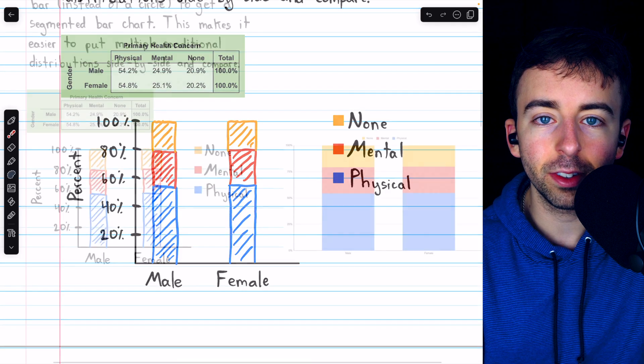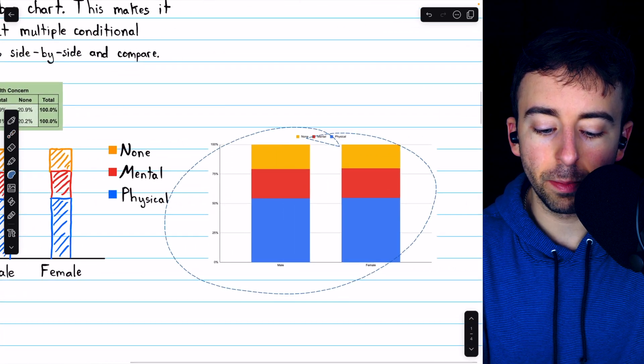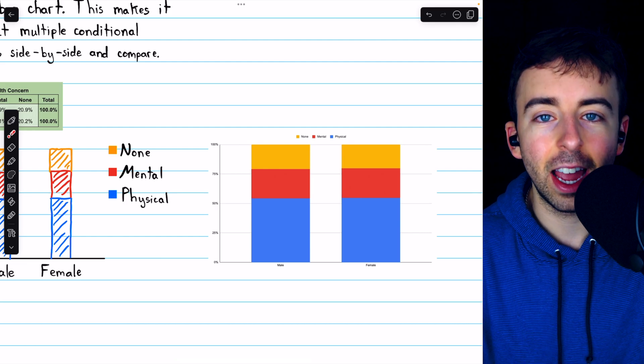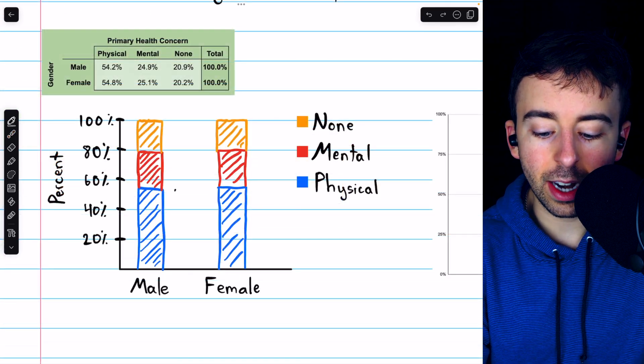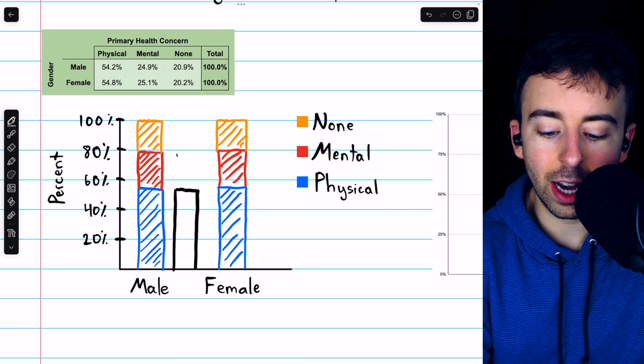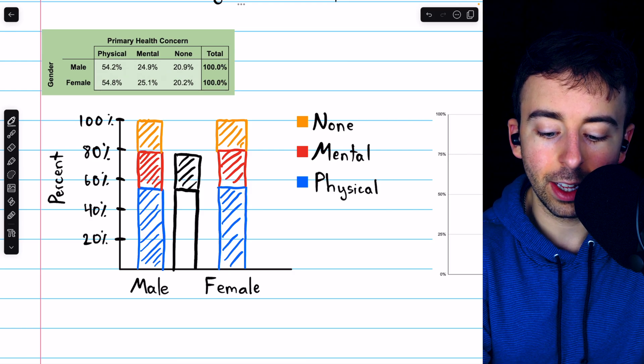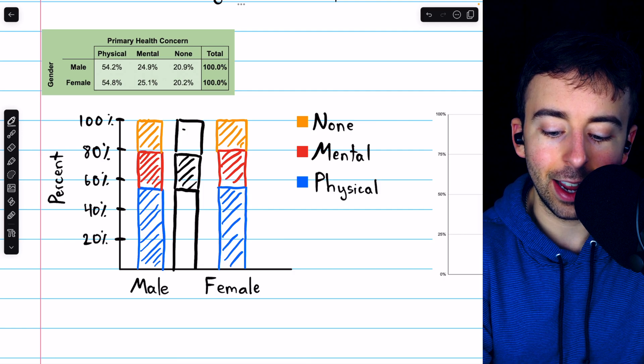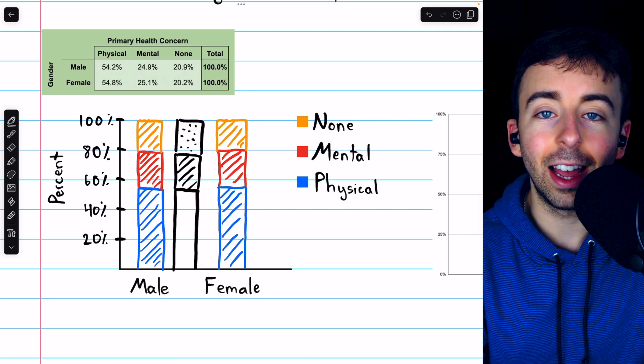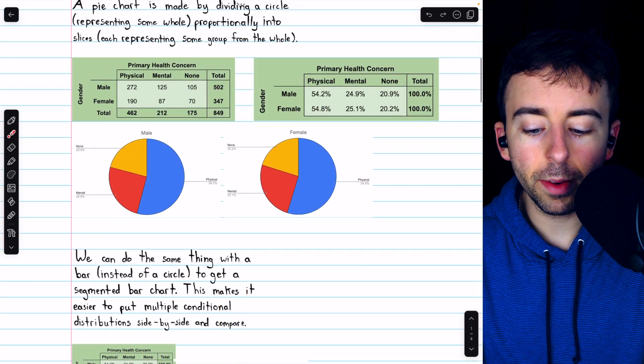And for comparison, here is a computer-generated segmented bar chart, which comes from the same data. And once again, if you didn't have colors and you were only using a single pencil, you could use shading patterns to distinguish between the segments. You could have no shading, diagonal shading, and then a speckled pattern, and you could make up more patterns as necessary. But that's what a segmented bar chart is and how to make one.